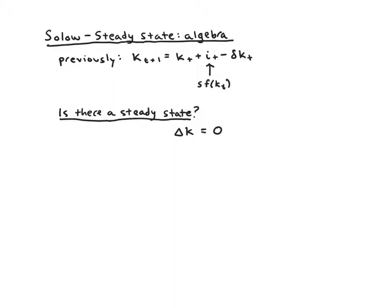Our starting point is an equation we discussed previously, which is our law of motion. The law of motion states that capital next period, k(t+1), is equal to whatever capital you had last period that you hold over, plus any new capital you get from investment, minus the capital you lose due to depreciation.